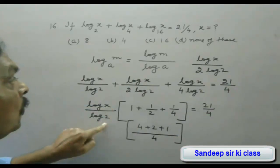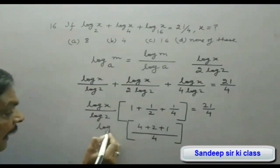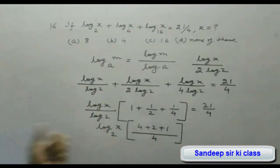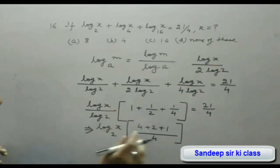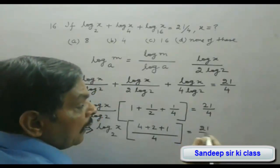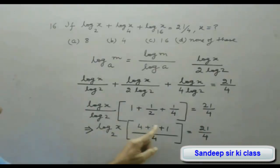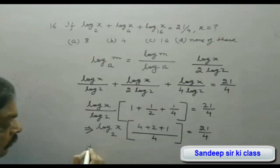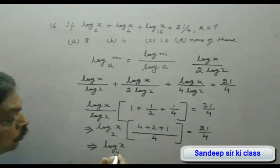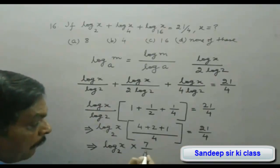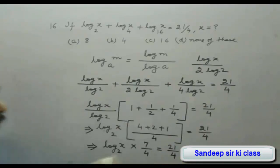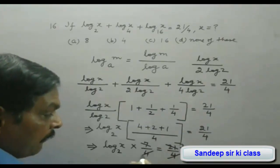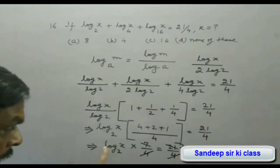Using the change-of-base formula, log x upon log 2 equals log x to the base 2. The bracket simplifies to 7/4, so we have log x to the base 2 multiplied by 7/4 equals 21/4. The 7s and 4s cancel.